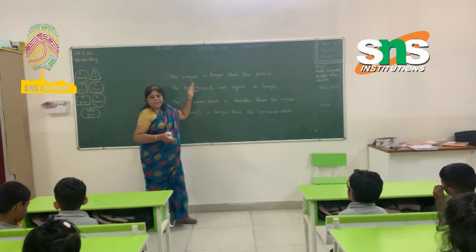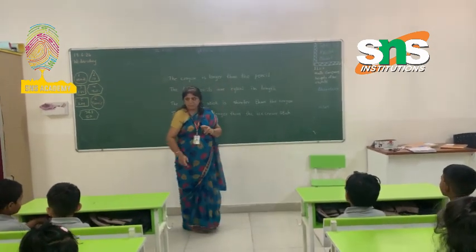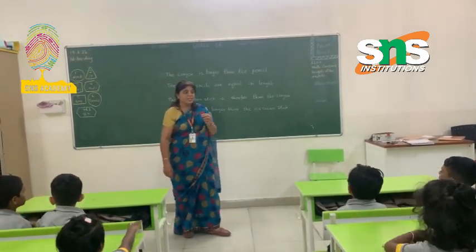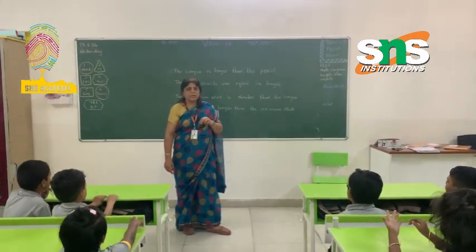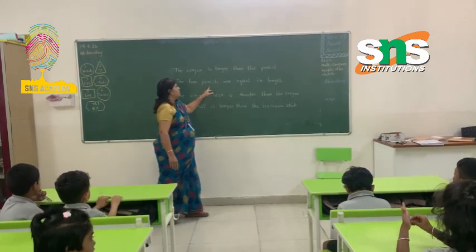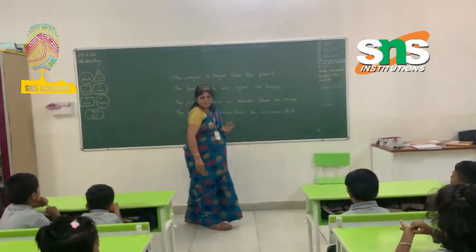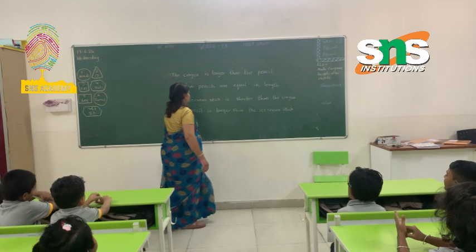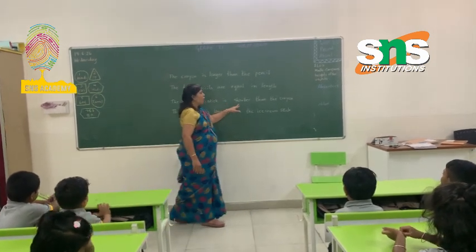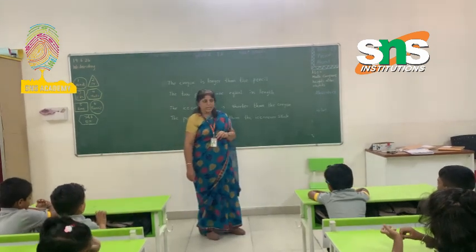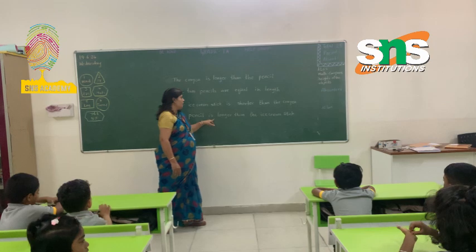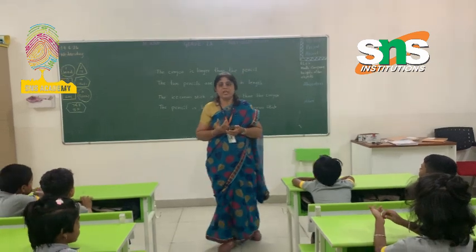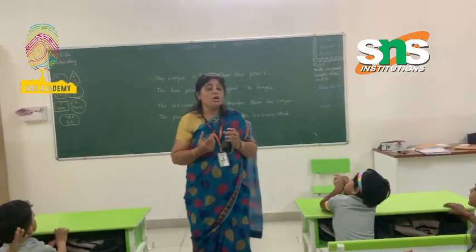The first statement is: the crayon is longer than the pencil. Let us find out whether the statement is true or false. The second statement is: the two pencils are equal in length. The third statement is: the ice cream stick is shorter than the crayon. And the fourth statement is: the pencil is longer than the ice cream stick. So these are the statements given for us, and we have to find out whether they are true or false.